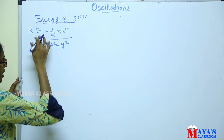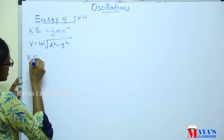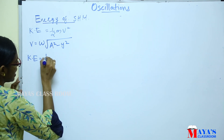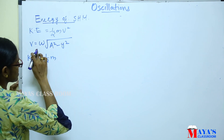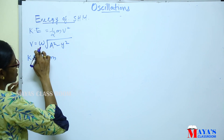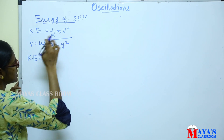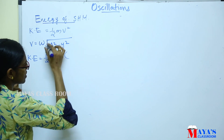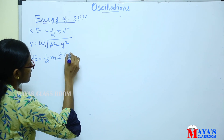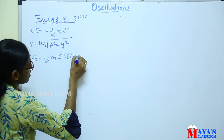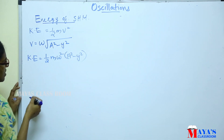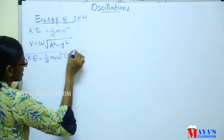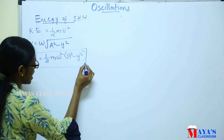If we substitute that equation, then the kinetic energy is equal to half m into v squared. This is the kinetic energy of Simple Harmonic Motion.